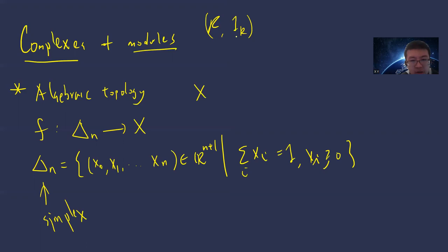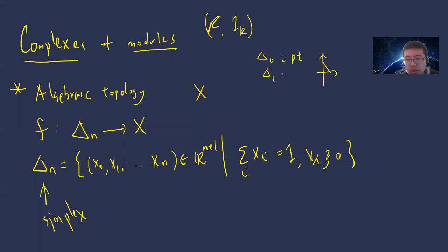When n equals zero it is just a point. When n equals one, x₀ + x₁ = 1, so it should be like a line segment. When n equals two, x₀ + x₁ + x₂ = 1, so it is like a triangle (2-simplex surface).